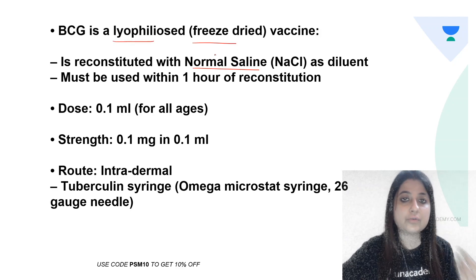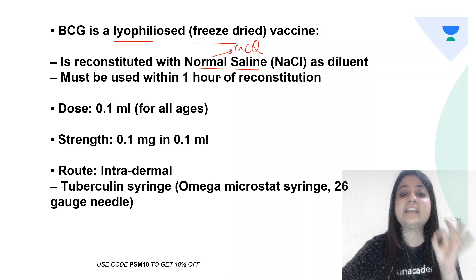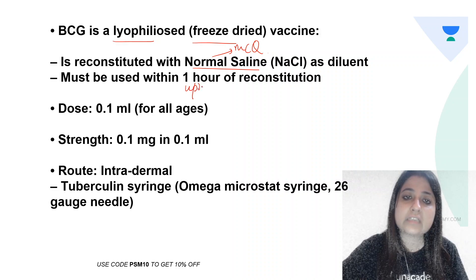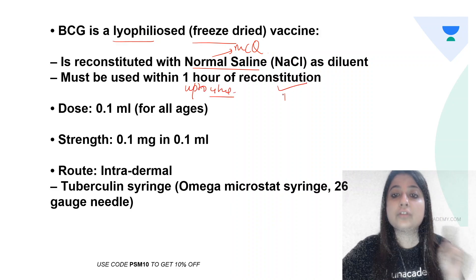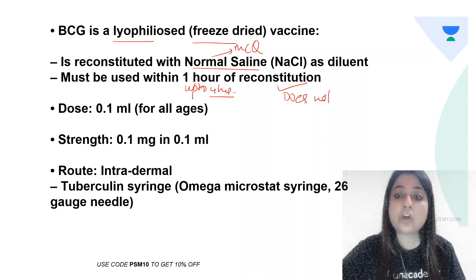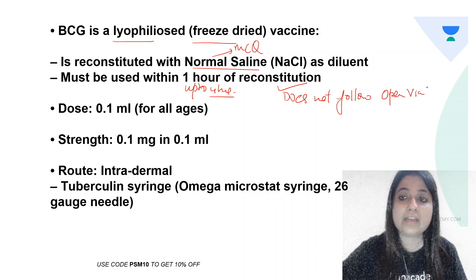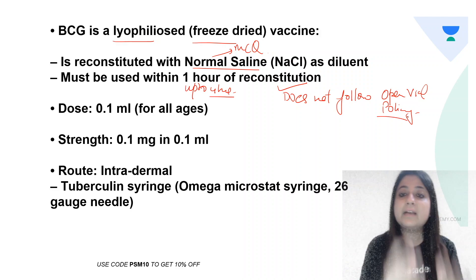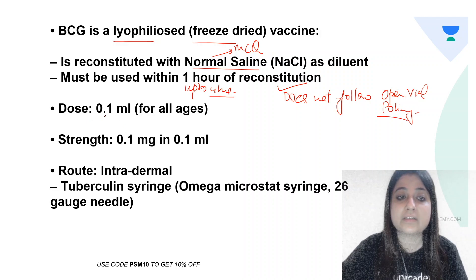Since it is a lyophilized vaccine, you have to use a diluent. Its diluent is normal saline, and it must be used within 4 hours of reconstitution. An important point is that BCG does not follow open vial policy. Only liquid vaccines follow open vial policy, like the T-series vaccines. BCG is a reconstituted vaccine, so it does not follow open vial policy.